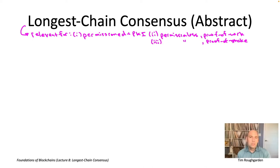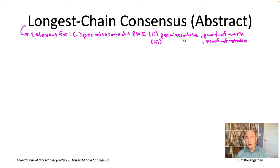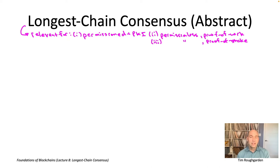If proof of work, proof of stake, and Sybil resistance mean nothing to you, don't worry about it — they're not prerequisites for understanding lecture eight. We'll cover those topics in detail in lectures nine and 12 respectively.